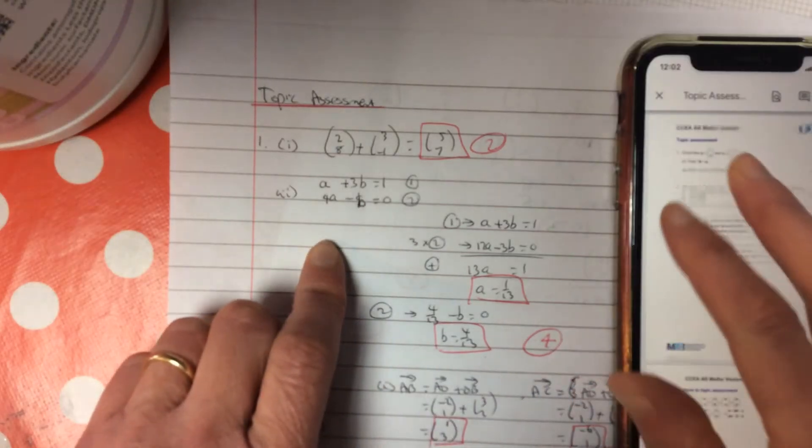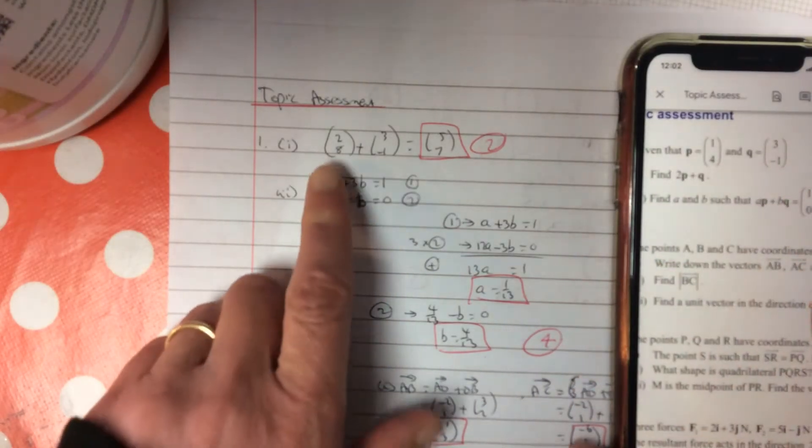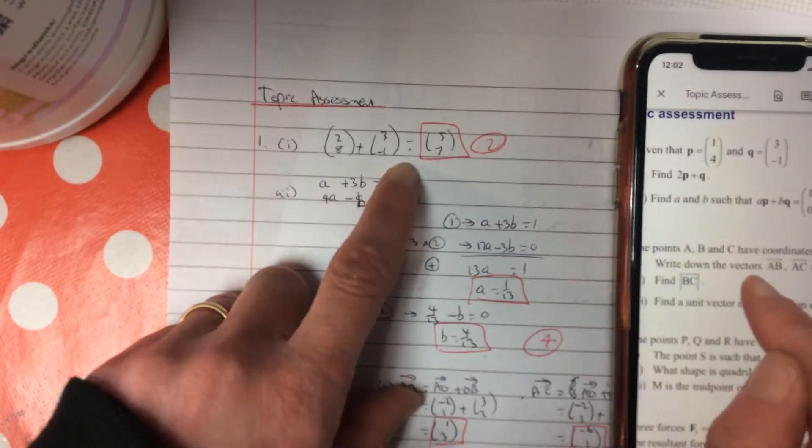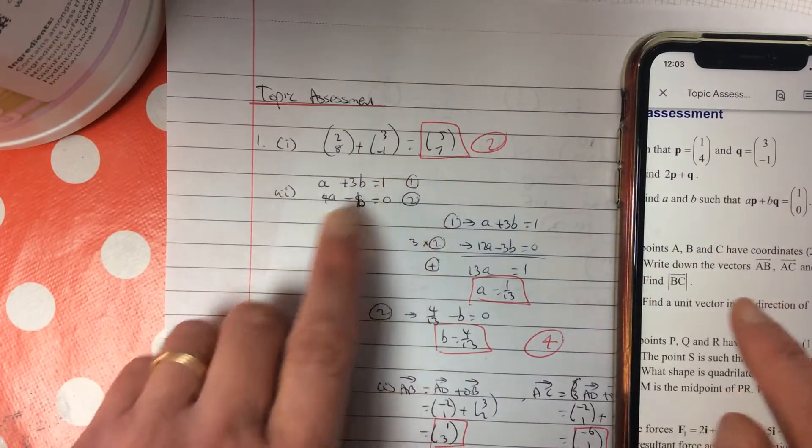OK, just talking you through this wee topic assessment. The first one, 2 times your P plus your Q, that's it. Next one,